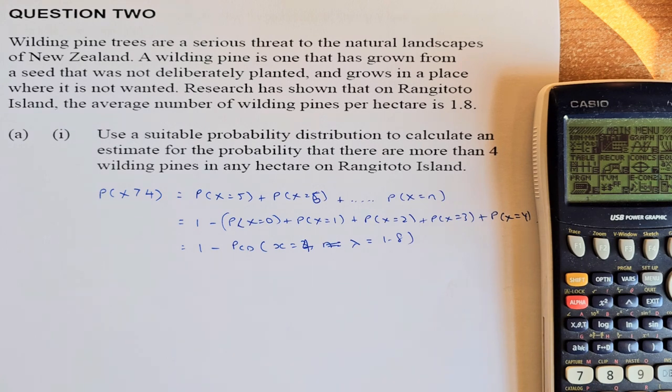Wilding pine trees are a serious threat to the natural landscape of New Zealand. A wilding pine is one that has grown from a seed that was not deliberately planted and grows in a place where it is not wanted. Research has shown that on Rangitoto Island, the average number of wilding pines per hectare is 1.8. Use a suitable probability distribution to calculate an estimate for the probability that there are more than 4 wilding pines in any hectare on Rangitoto.